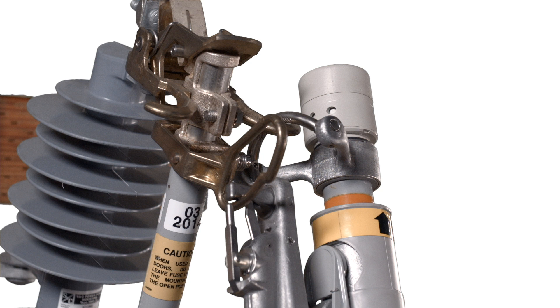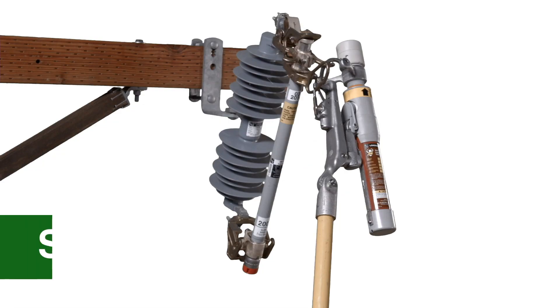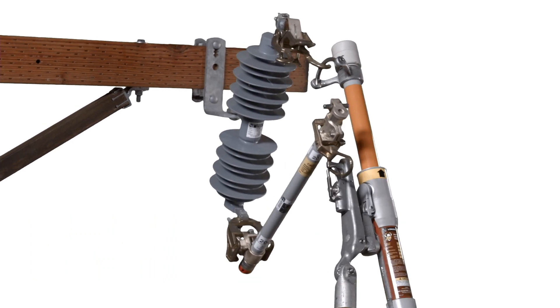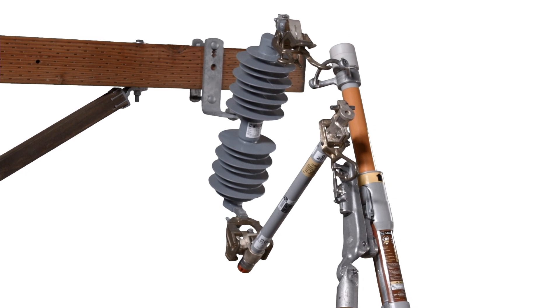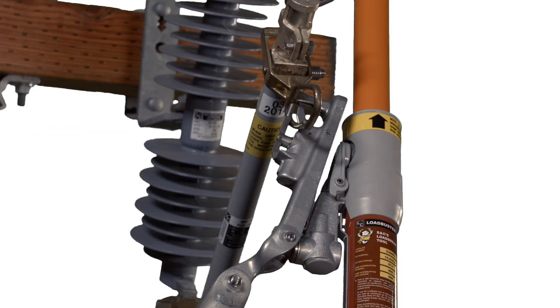The Loadbuster tool is now connected across the upper contact of the SMU-20 power fuse. Step 3: To open the circuit, operate the Loadbuster tool with a firm, steady pull until it is extended to its maximum length. Avoid jerking and hesitating. The resetting latch will keep it open.